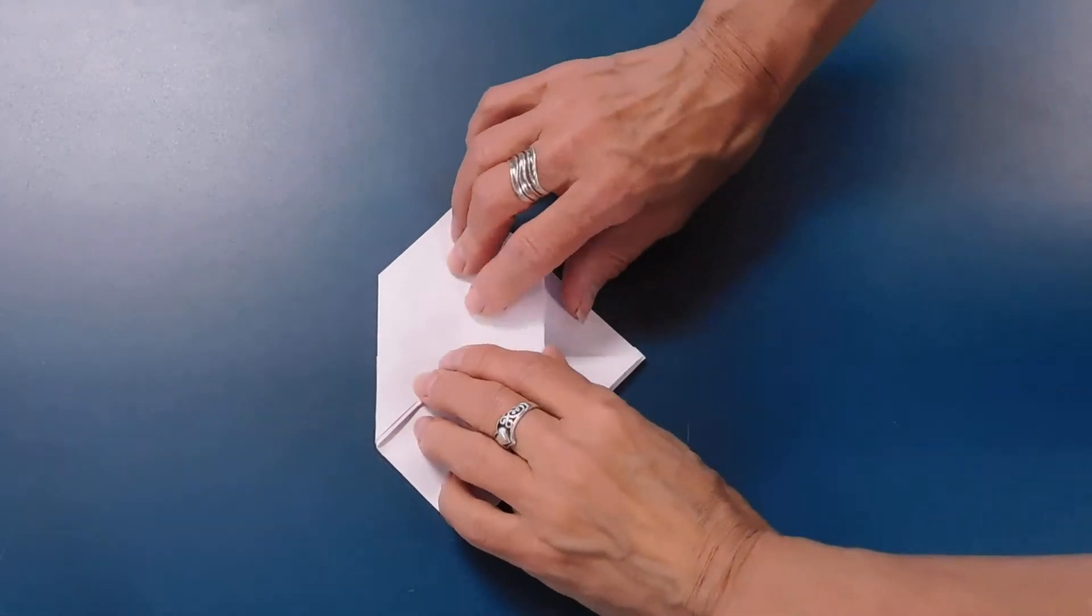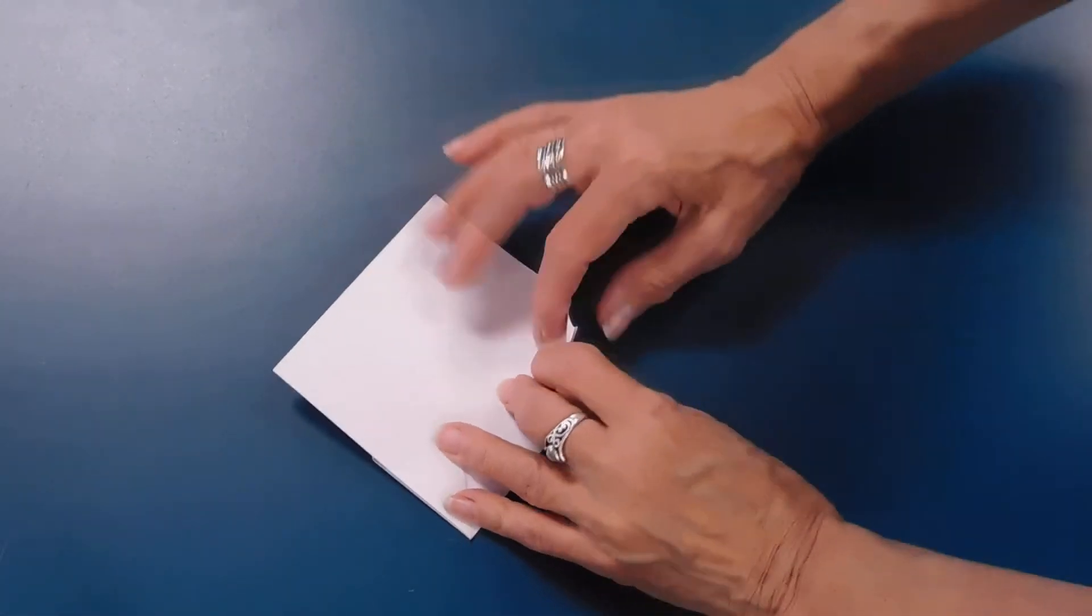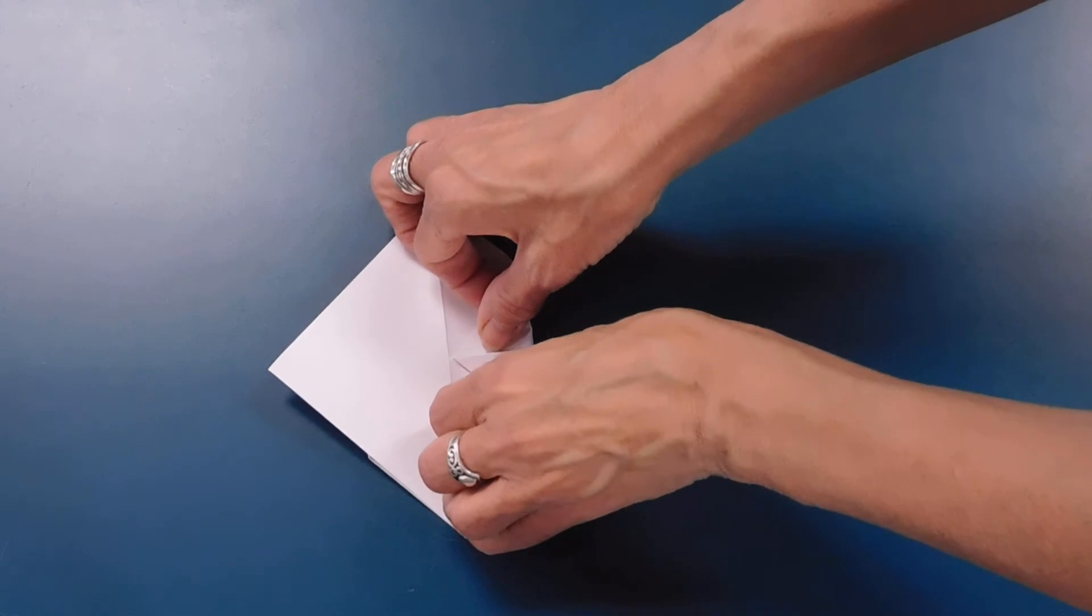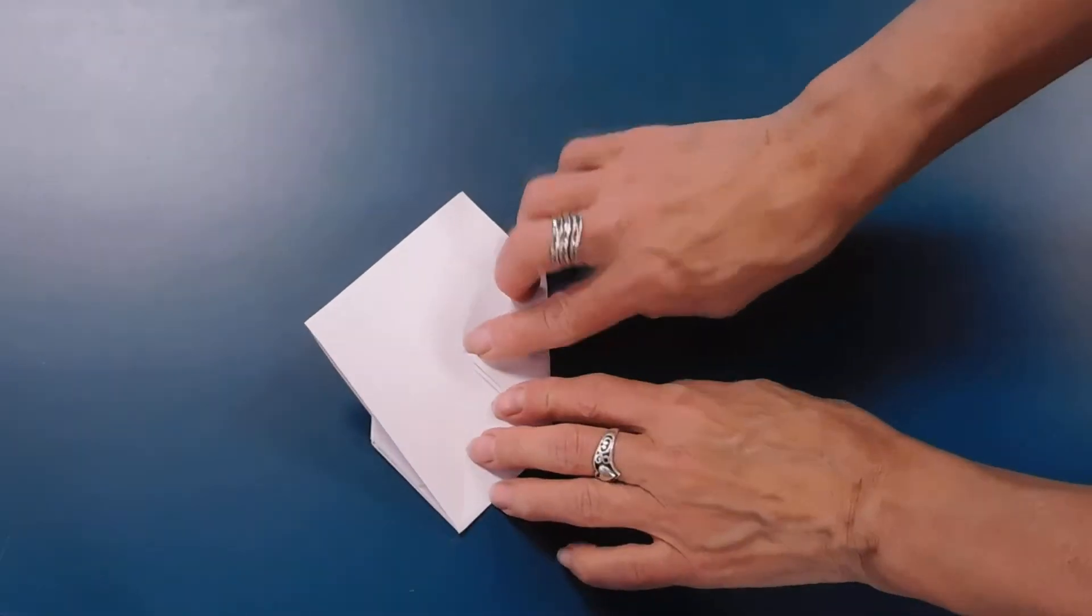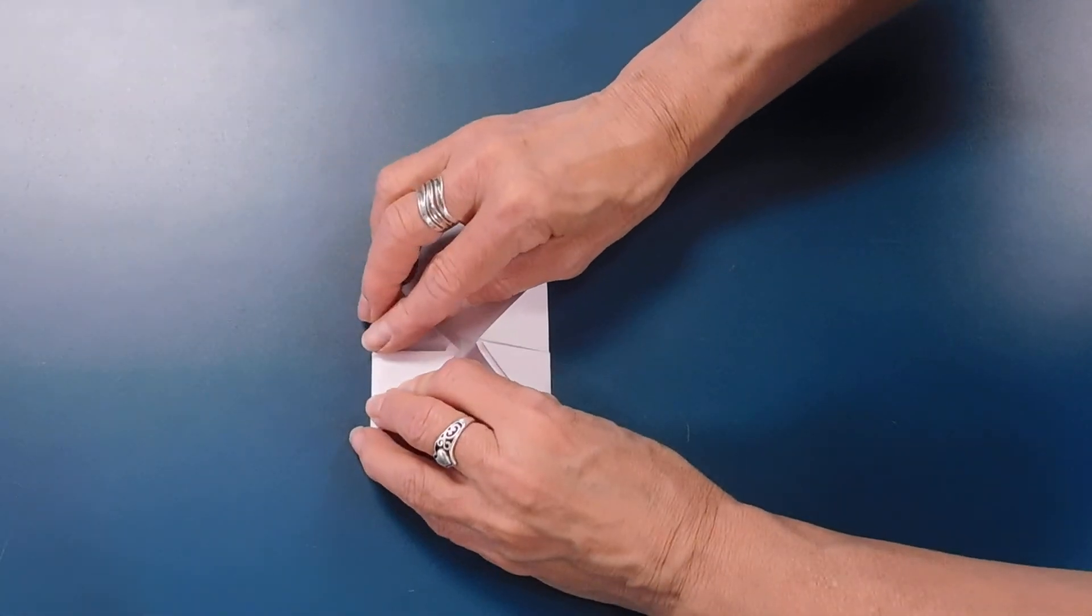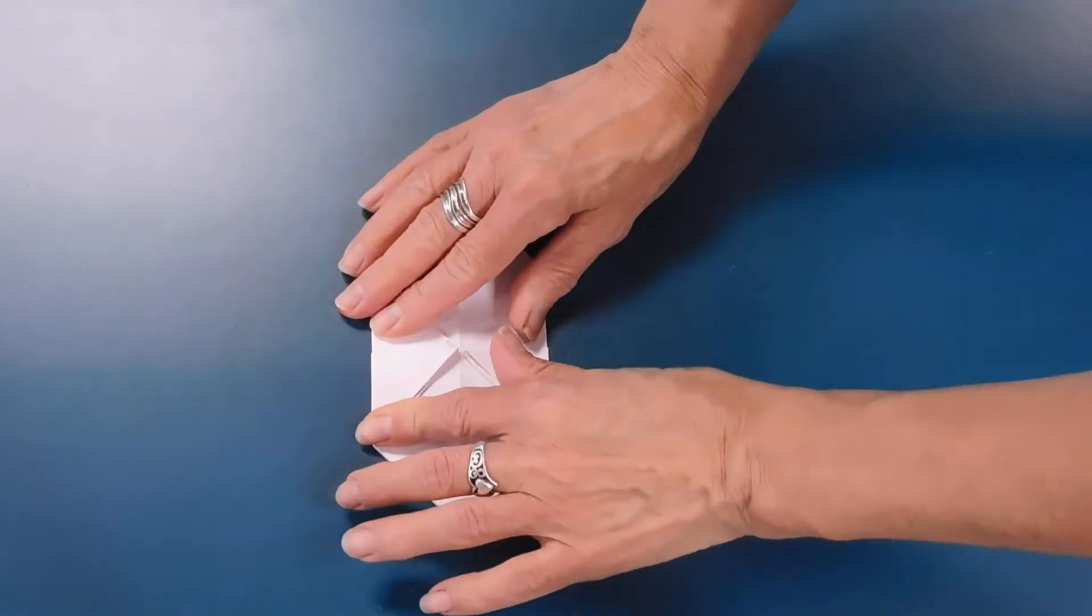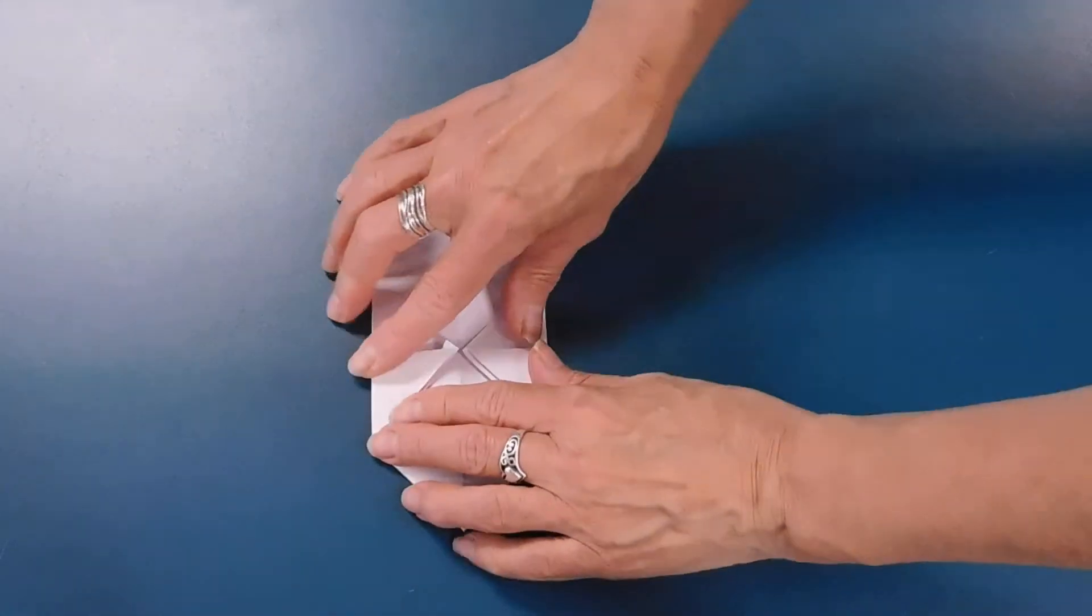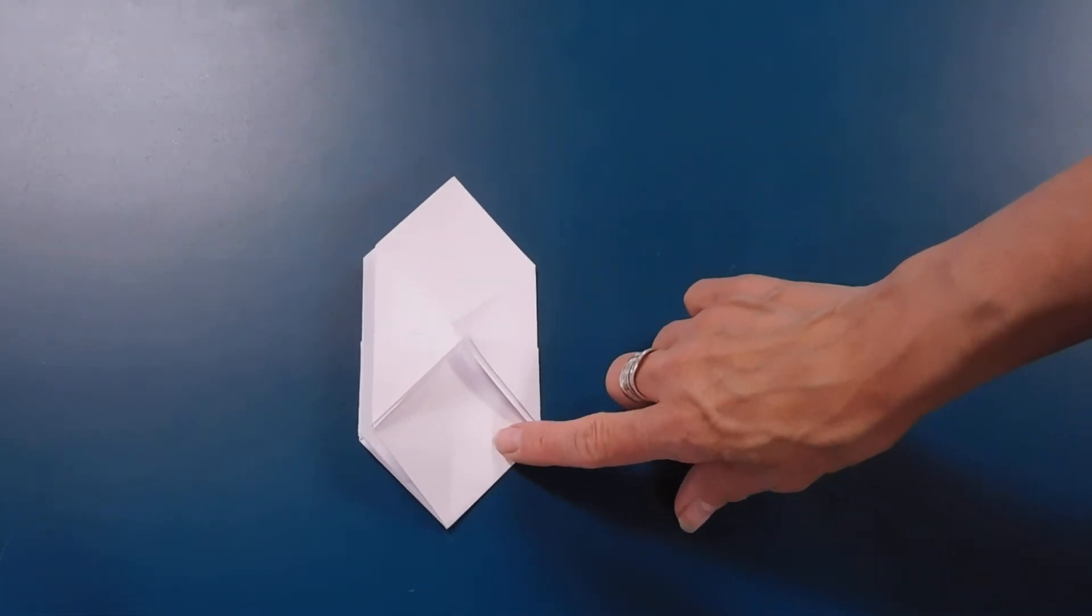And we're going to fold that right hand layer over, over again. And we're going to do what we just did all over again. So fold that right point to the center point. Fold the left point to the center point. So now we have another thing to do.